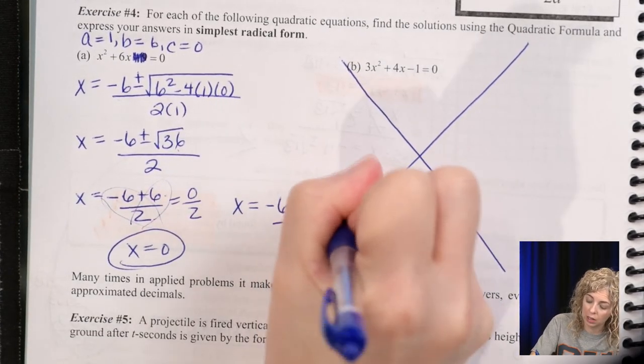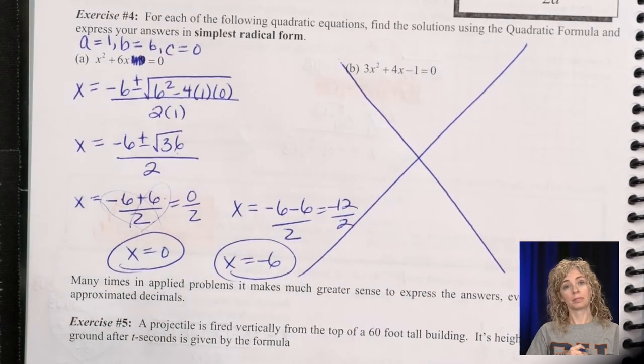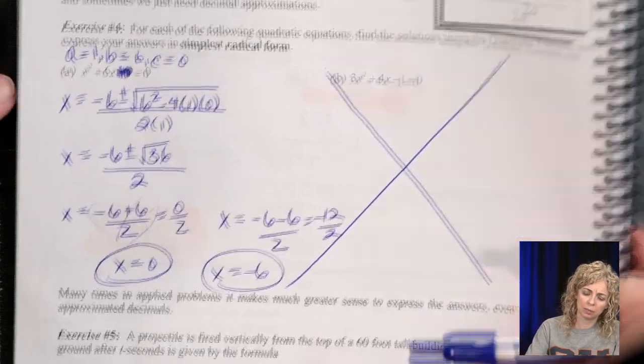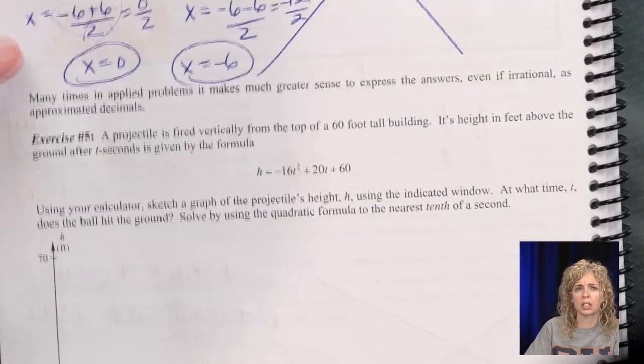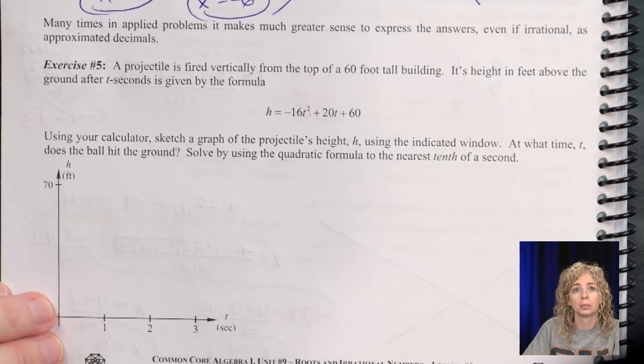And then we get negative 12 divided by 2, x equals negative 6. And there you have it. Alright, last question, because I want to cancel or cross out b. I want to take a look at the word problem.